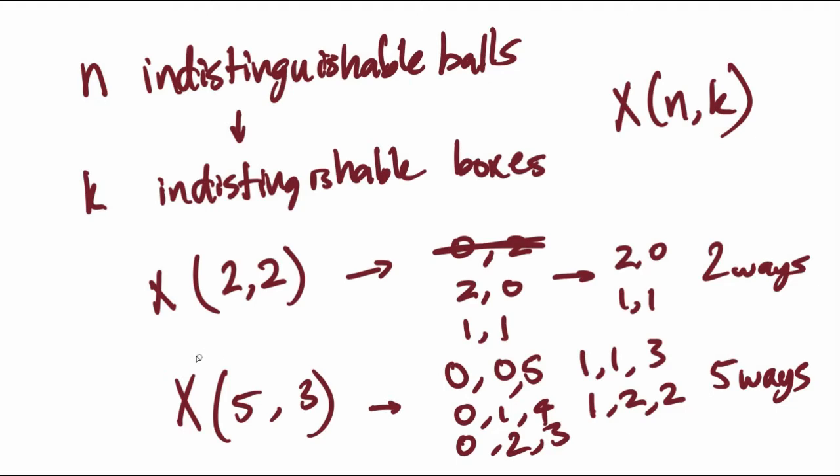This question is hard because in normal combinatorics problems — permutation combination problems — you don't have indistinguishable boxes. To illustrate this, I have two examples laid out here. The number of ways to put two indistinguishable balls into two indistinguishable boxes is 2: (0,2) and (1,1). Notice that (0,2) is a duplicate of (2,0) because the boxes are indistinguishable. And the number of ways to put five indistinguishable balls into three indistinguishable boxes — I've listed them out — and as you can see, there are five ways.